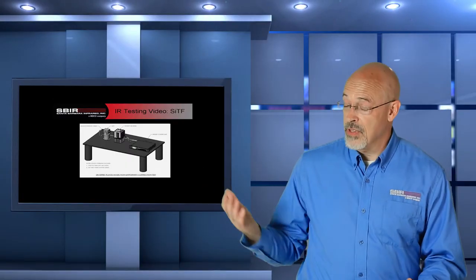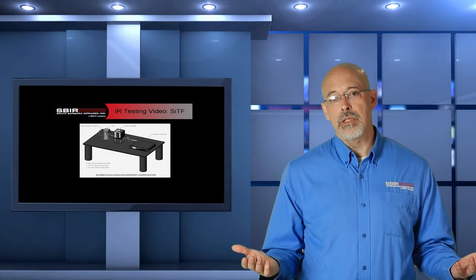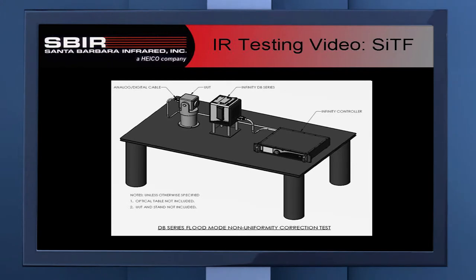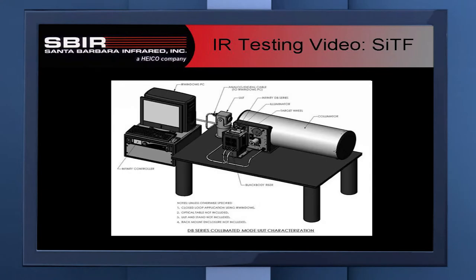The configuration shown in this slide is referred to as a flood configuration, where we take the blackbody, put it right up against the camera, and use that output temperature to stimulate the camera. We know or can measure what the output of the blackbody is and look at the response of the camera. In some laboratories there is a more involved setup — a scene projection system or target projection system — with optics used more commonly for other parts of testing but that can still be used in an SITF configuration.